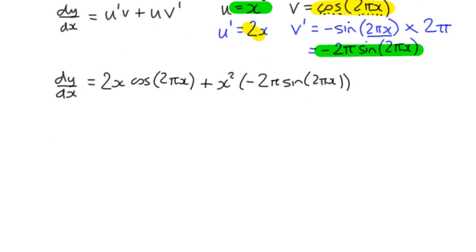And I can simplify that second term by writing the negative 2π. Now that's just a constant. So it becomes minus 2πx² sine 2πx. There we go. That's our derivative using the product rule.